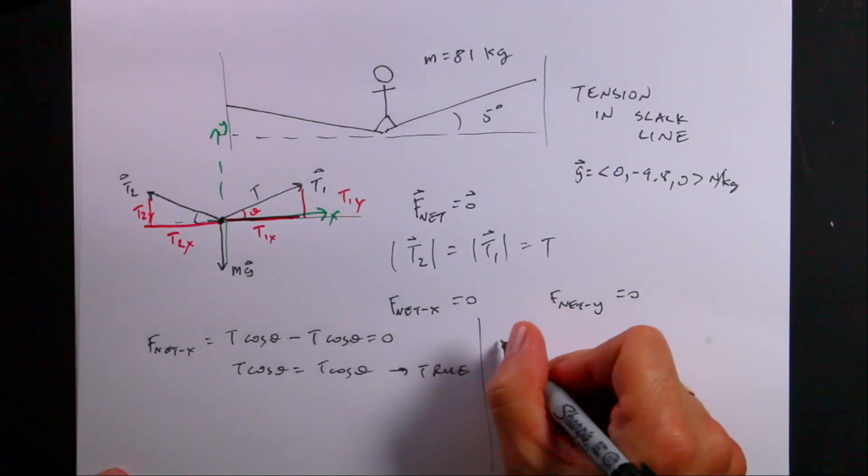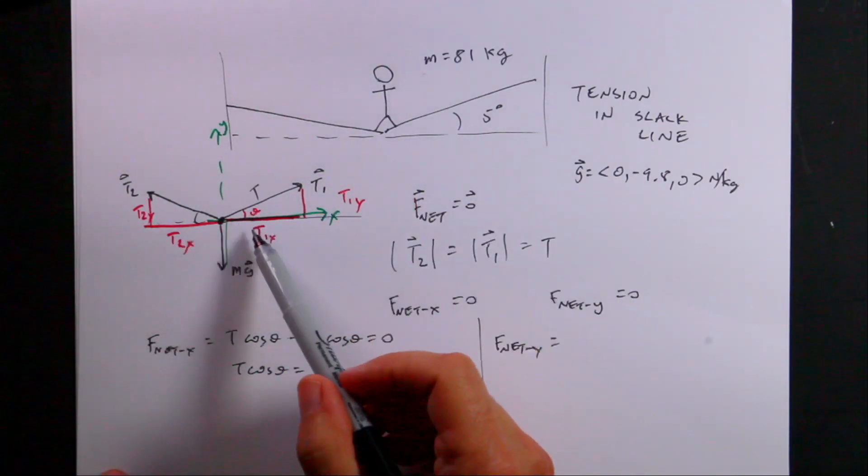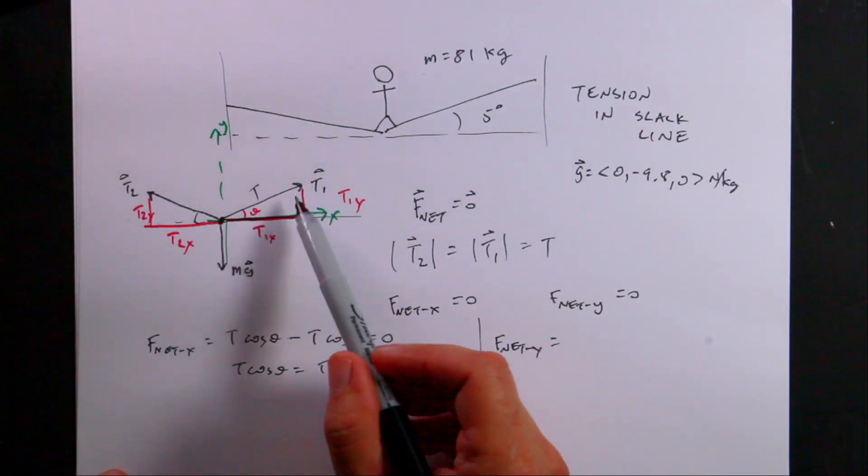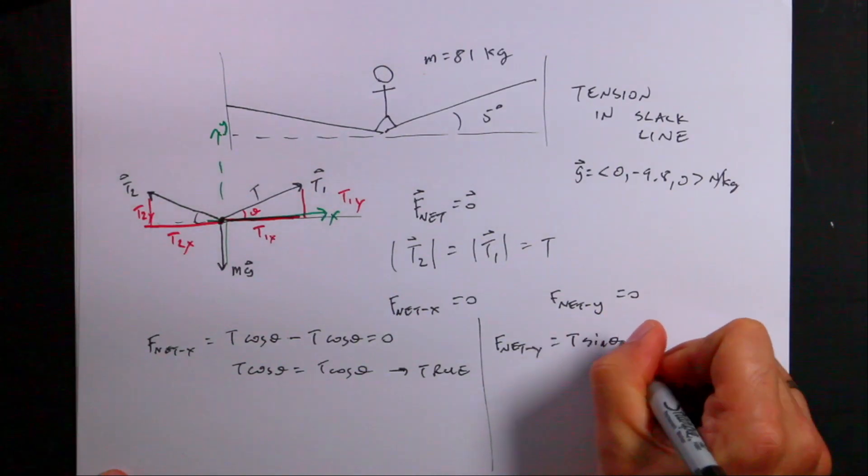Okay. Let's look at the y equation then. So f net y. So what forces do I have in the y direction? Well, I have a component of T1. And that's going to be T times the sine of that angle because this is the opposite side. So this is going to be T sine theta.